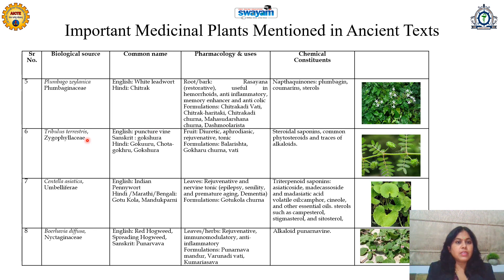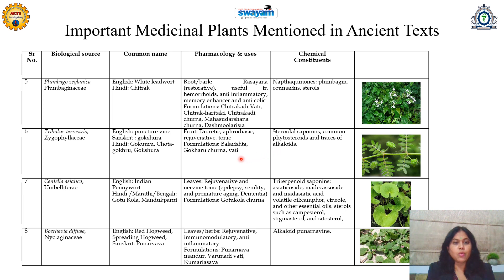The next drug is Tribulus terrestris, belonging to family Zygophyllaceae, commonly known as puncture vine. In Sanskrit, it is Gokshura; in Hindi and Marathi, it is called as Gokhru. Its fruits are diuretic, aphrodisiac, and rejuvenative tonic in nature, because of the presence of steroidal saponins, phytosterols, and traces of alkaloids. This plant is commonly found in farms and is generally considered a weed. It is an ingredient of formulations like Balarishta, Gokhru churna, or Gokhru vati.